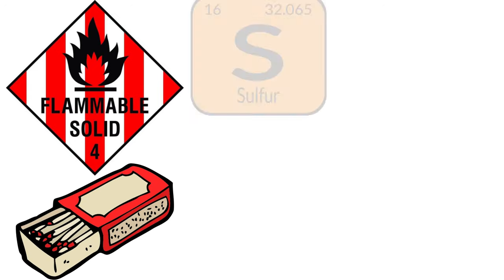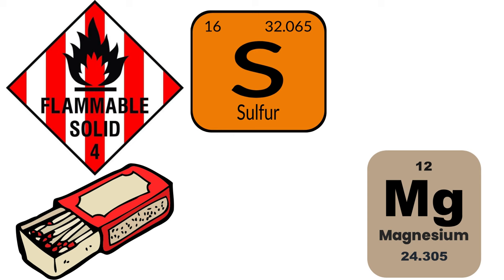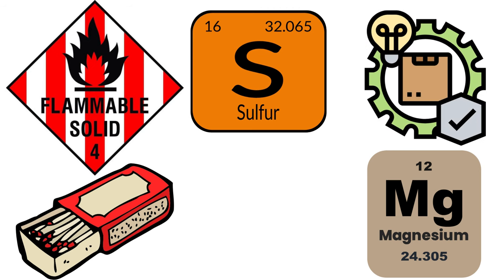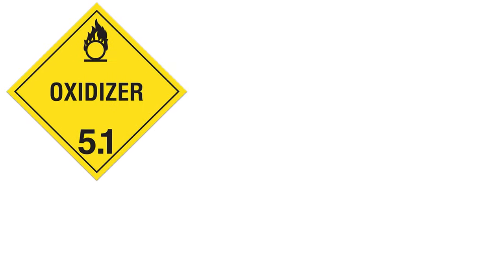Class 4 is Flammable Solids — materials that can ignite easily. Think of items like matches, sulfur, or even some types of metals. Matches are a classic example; they can catch fire from friction or heat. Flammable solids are often encountered in manufacturing, particularly in industries that involve machining, welding, or cutting metal. Proper precautions must be taken to avoid accidental fires.